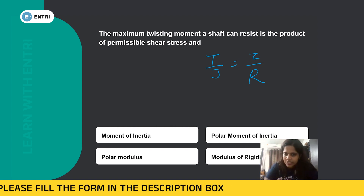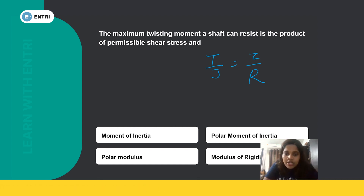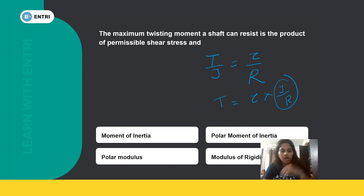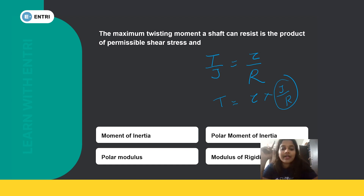The maximum twisting moment T — if we cross-multiply the torsion formula T/J = tau/r — it is equal to tau multiplied by J/R. So it is the product of permissible shear stress tau and J/R. Now J is the moment of inertia, but we are not considering the ordinary moment of inertia. We will be considering the polar moment of inertia.